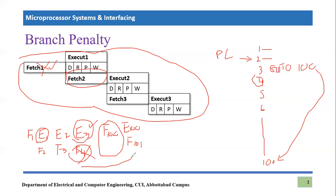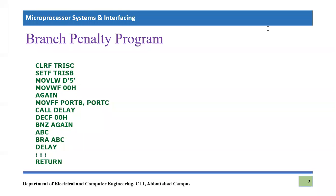Let's notice this branch penalty in a PIC18F452 example. I have created an example program. The first instruction is CLRF — clear file. It will clear the TRISC register, which is a file register with eight bits. Every bit of TRISC becomes zero after this instruction. Clear means zero, and set means equal to one.